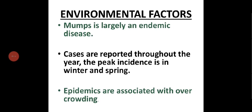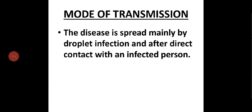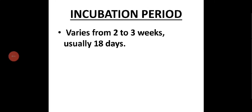Mumps is largely an endemic disease. Cases are reported throughout the year; the peak incidence is in winter or spring. Epidemics are associated with overcrowding. Infection is transmitted by droplet infection or after direct contact with an infected person. The incubation period is two to three weeks, usually 18 days.